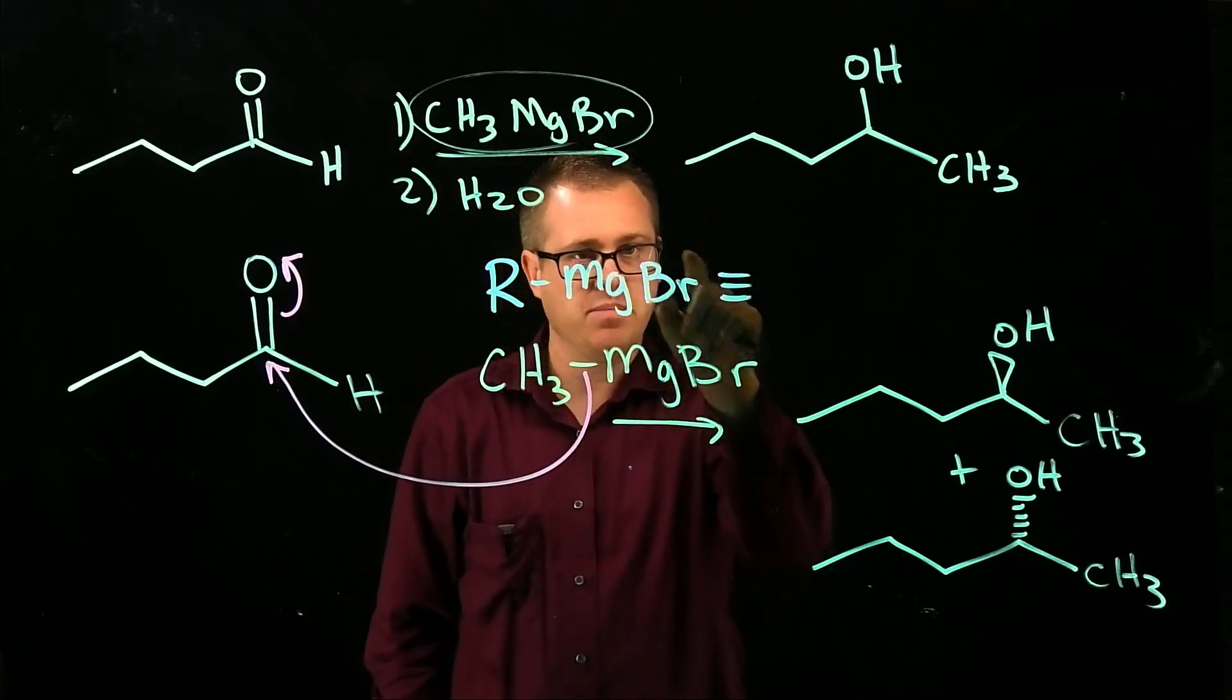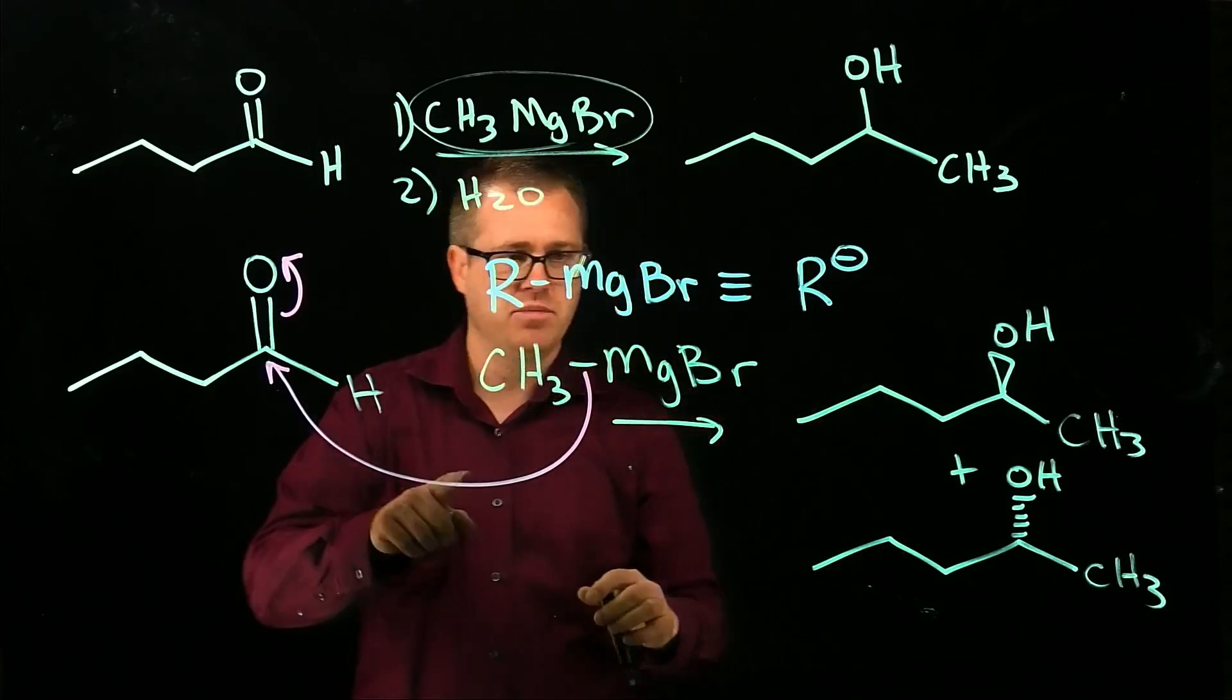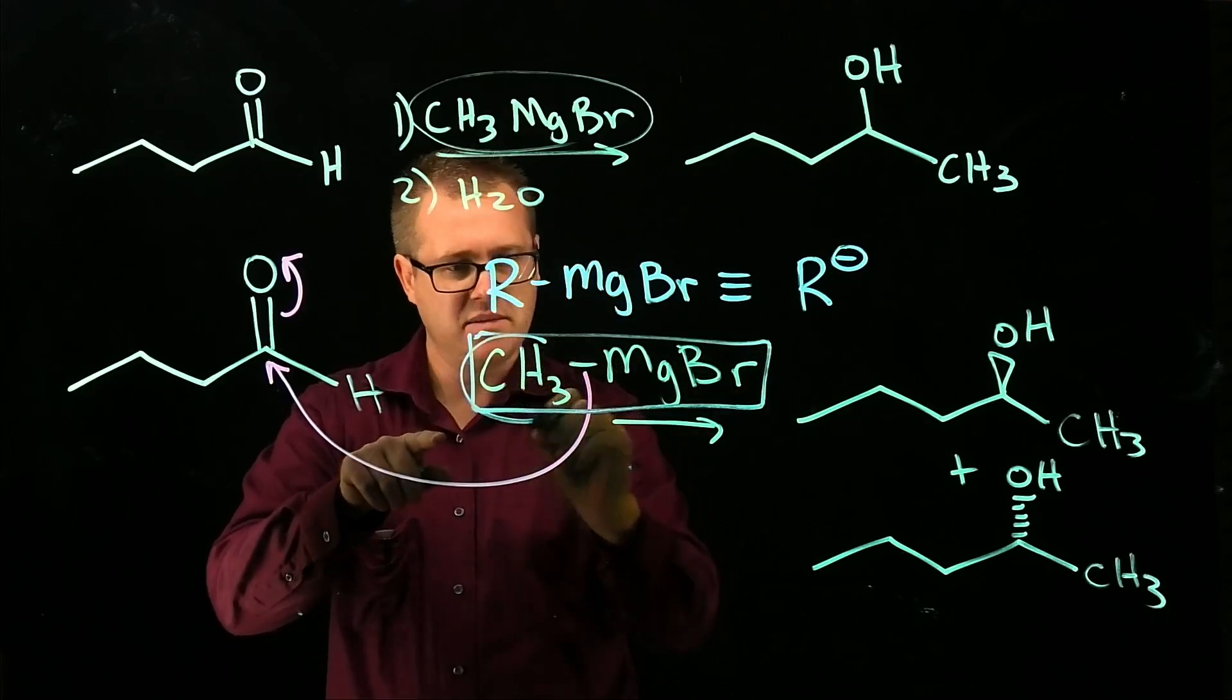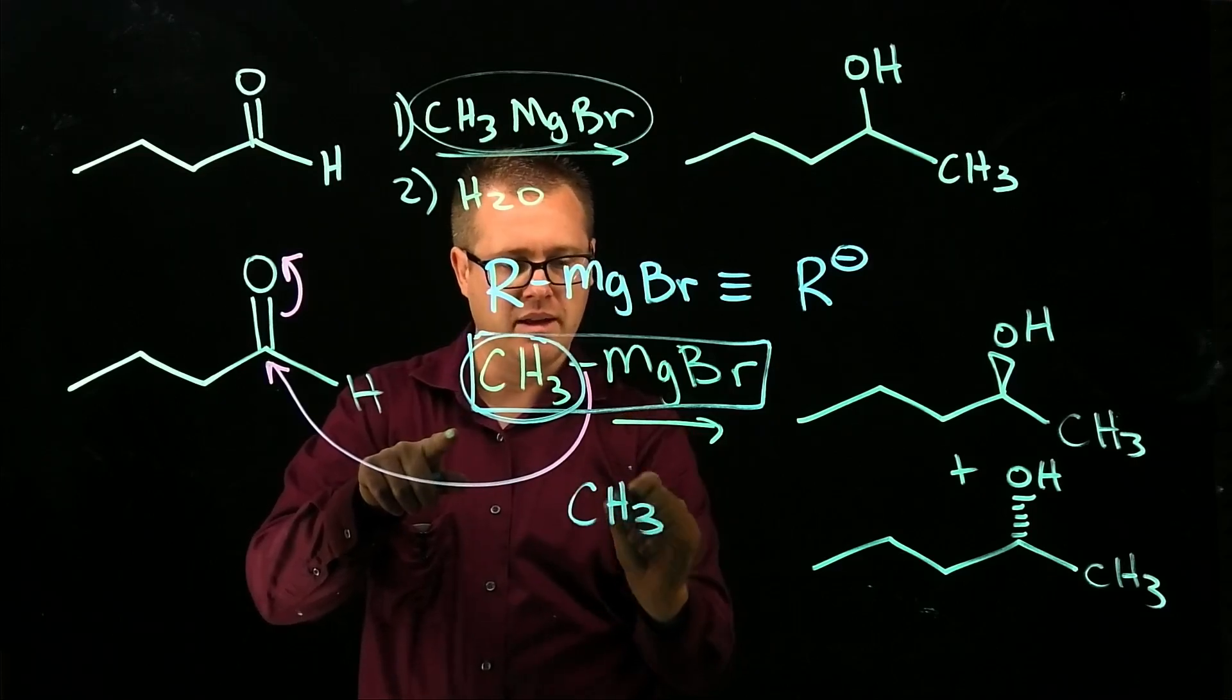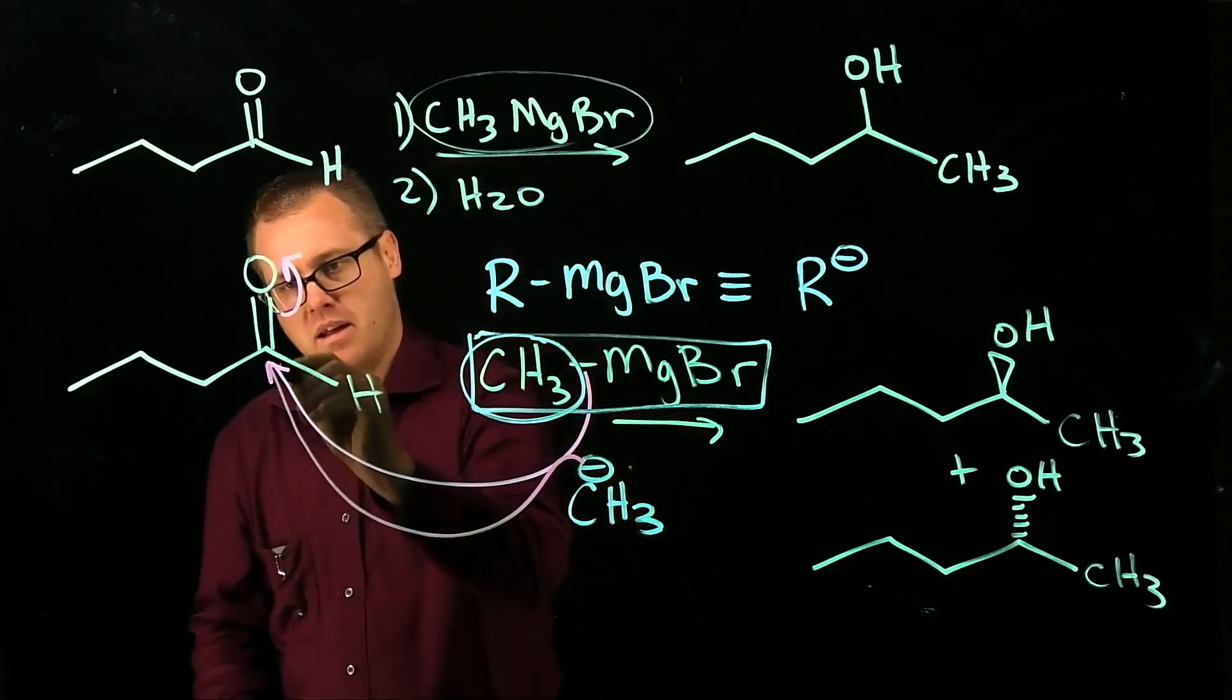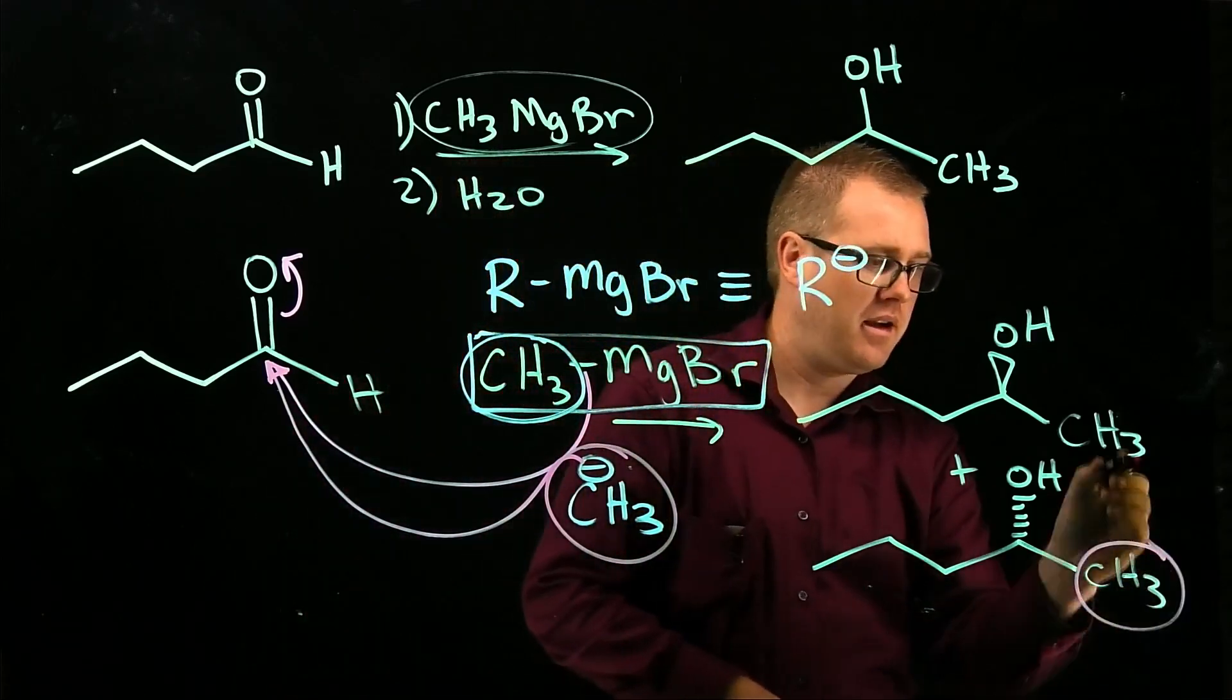You could look at this whole species simply as R-. So if I take that principle here and apply it to this right there, I could have said this piece is my R, and it's just R-, so I could actually have written it like this, CH3-, and then I could have used that to see my nucleophile. And so you can see that right there.